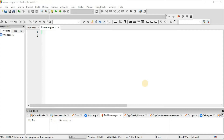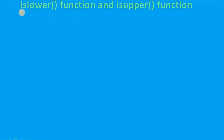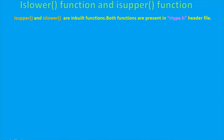Welcome to our programming channel. Today in C programming we are going to see isLower function and isUpper function. isUpper and isLower are inbuilt functions. Both functions are present in the ctype.h header file.